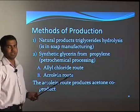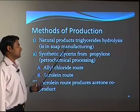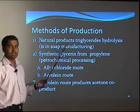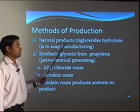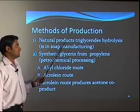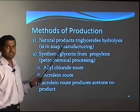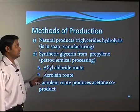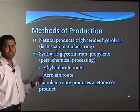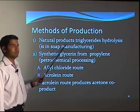The methods of manufacturing glycerin: the natural product route is triglyceride hydrolysis in soap manufacturing, as seen earlier. The fatty acid and glycerin are formed, and the glycerin stream is sent to the triple effect evaporators to get crude glycerin. This can be sold as yellow glycerin or passed through charcoal to give white grade glycerin for human consumption.